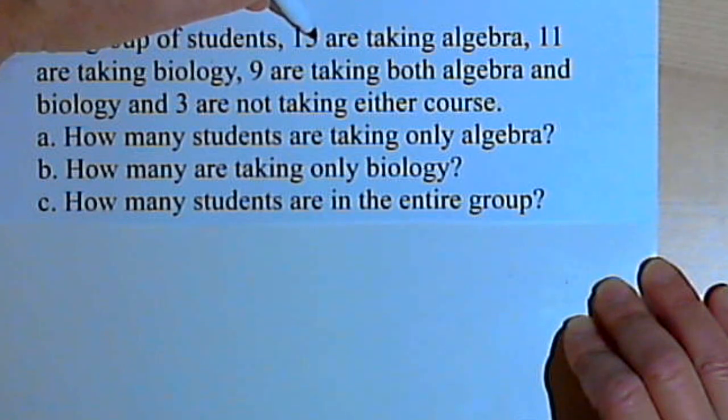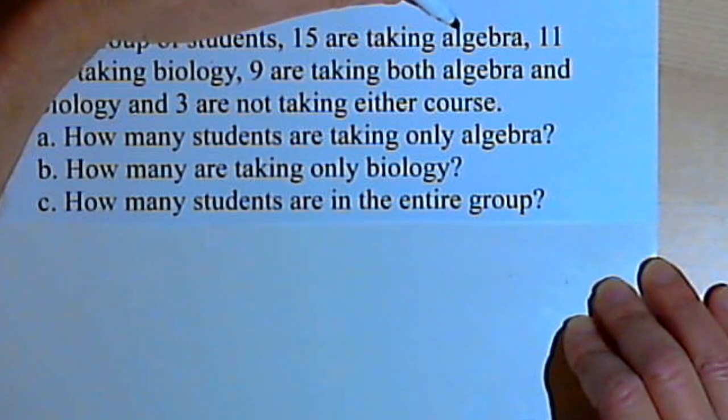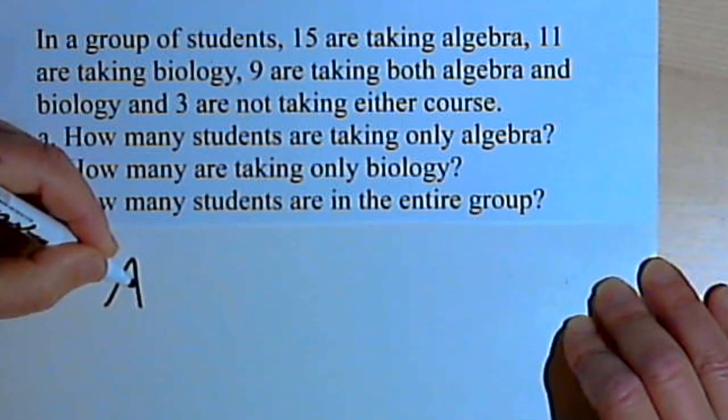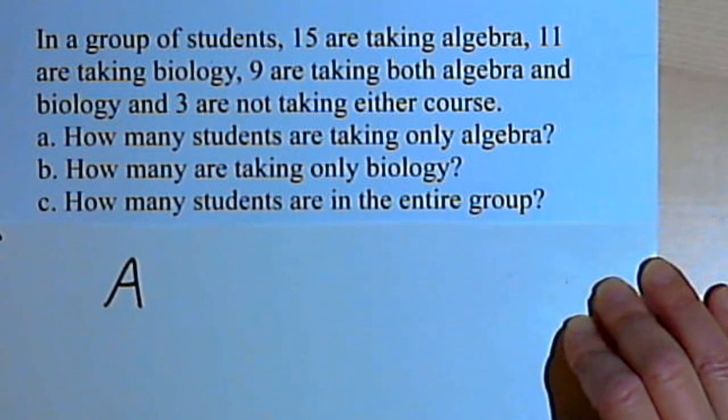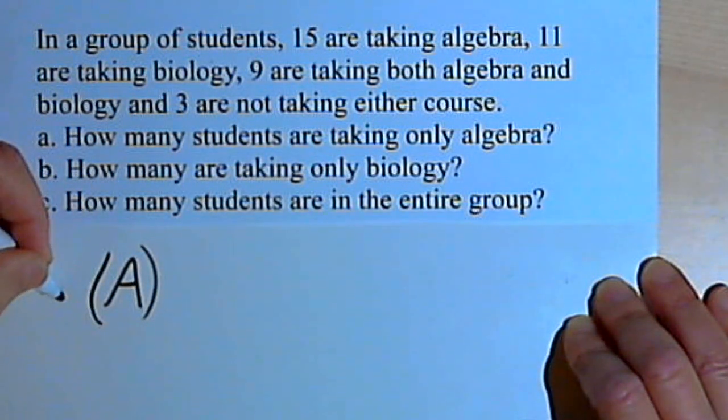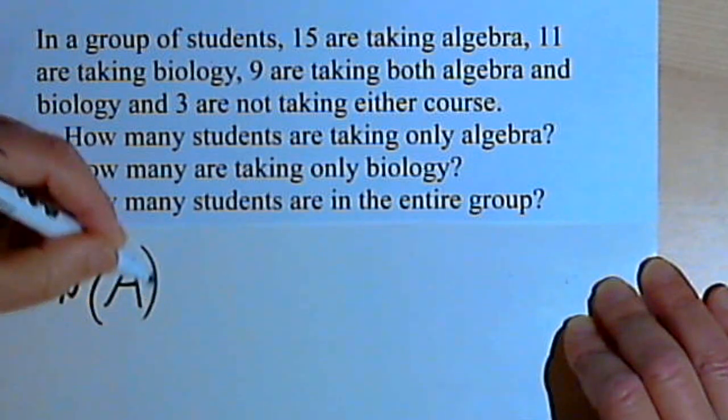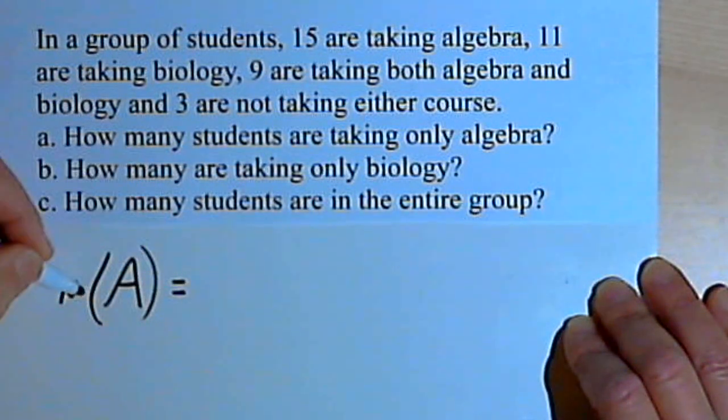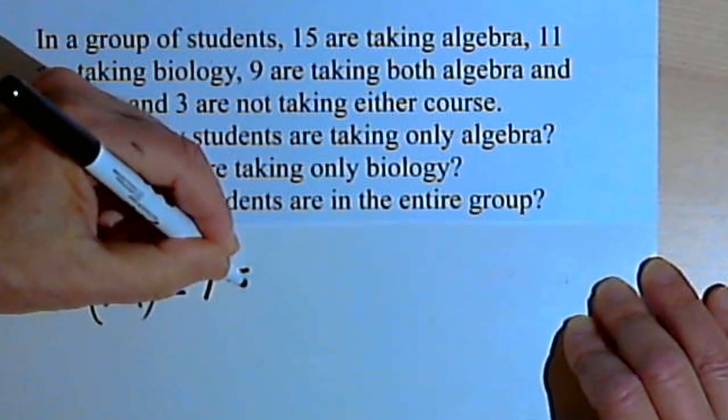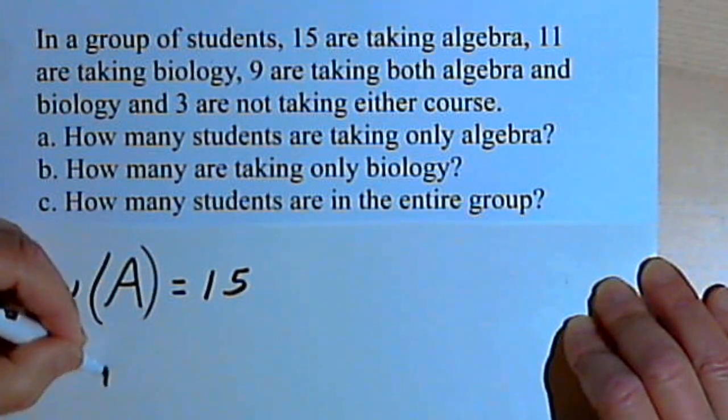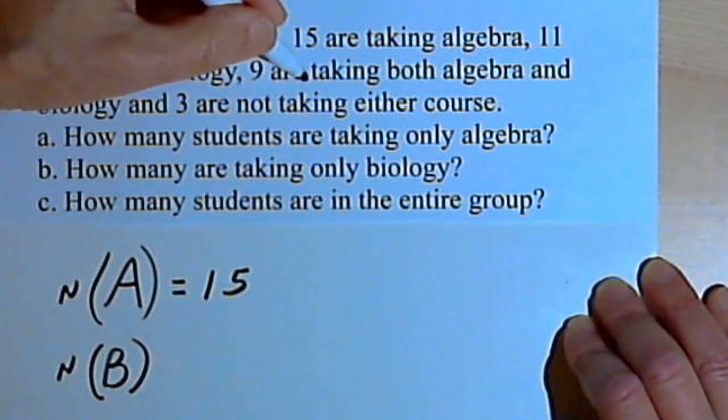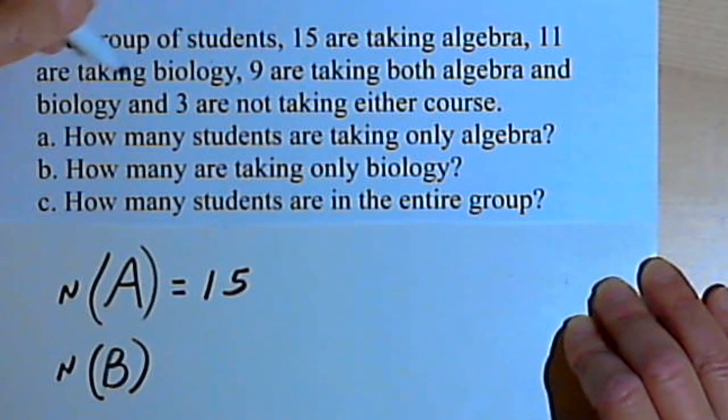So we've got 15 students taking algebra. That means we'll have a set of students that we can call A. Those would be the students taking algebra. And if I know the number of students in that set, I can write an n and then put the A in parentheses after it. And that will tell me that the number of students in set A is 15. I'll also make a set B for the students taking biology. And the number of students in set B is 11.